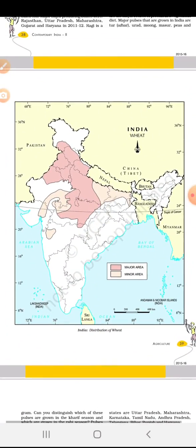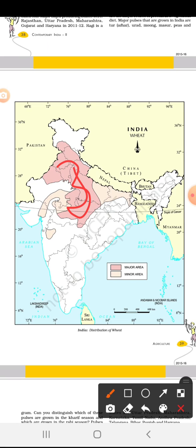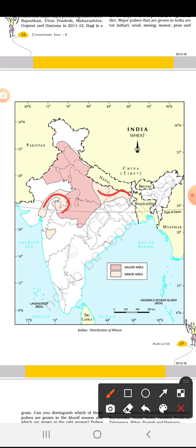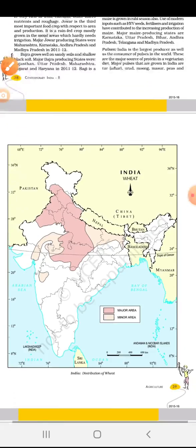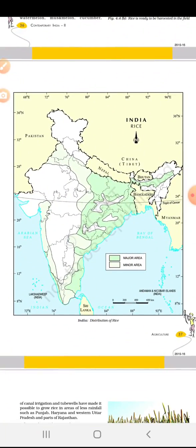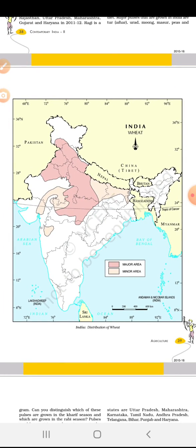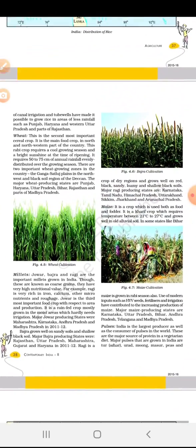The next map is distribution of wheat. This is also a political map. On this map, the light brown color shows the major area of wheat — the highest wheat producing areas — and the light peach color shows the minor area of wheat. So you need to take two political maps: on one, sketch and color the distribution of rice, and on the other, sketch and color the distribution of wheat. I will include both these maps as questions in the PDF I send you.